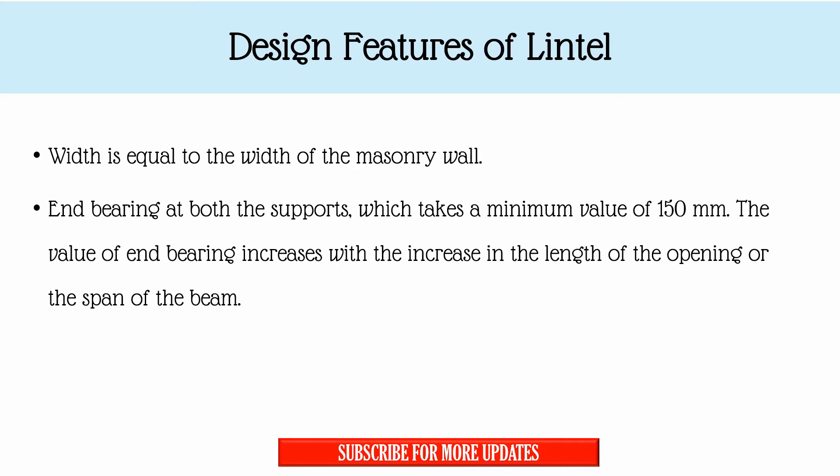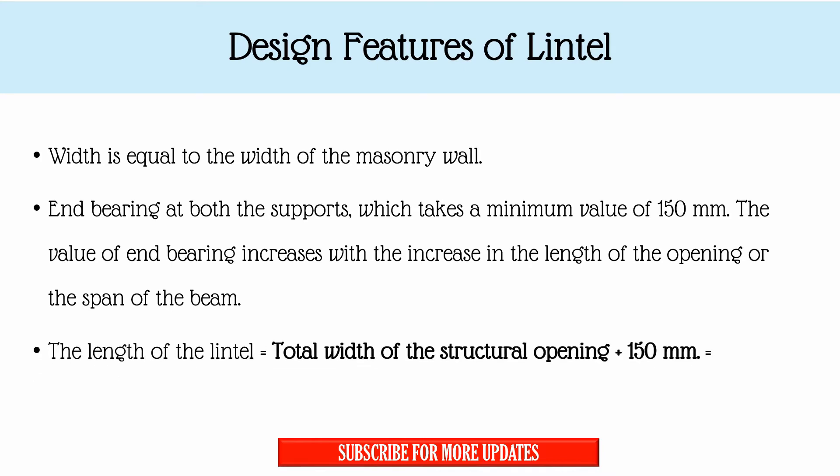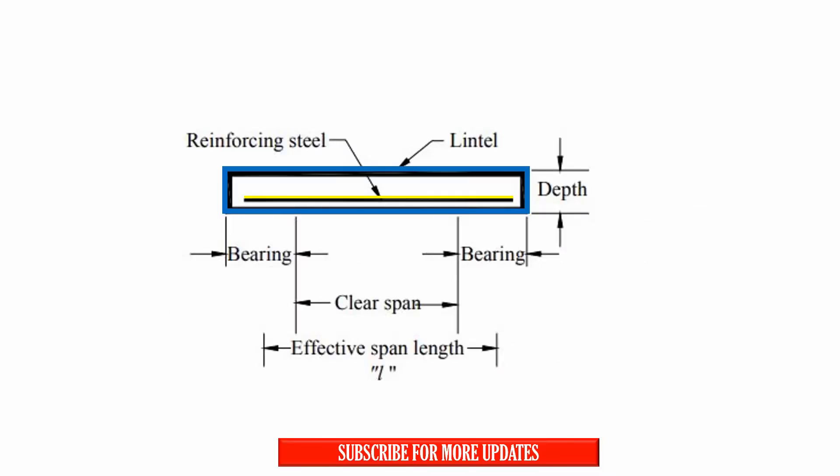The minimum end bearing value of 150 mm can go higher but not lower. This is explained by the following figure. The calculated length, or span, of the lintel is the total width of the structural opening plus 150 mm. In the figure, the bearing is the support of the lintel beam, and the clear span is the actual dimension of the opening provided. The bearing is the length into which the lintel beam is embedded into the masonry wall. The effective span is given by the formula: clear span plus half the bearing provided on either side.